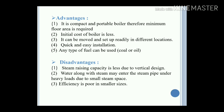Advantages of the Cochran boiler: it is a compact and portable boiler, therefore minimum floor area is required. Initial cost of the boiler is less. It can be moved and set up readily in different locations. Quick and easy installation. Any type of fuel can be used. Disadvantages: steam raising capacity is less due to the vertical design. Water along with steam may enter the steam pipe under heavy load due to the small steam space. Efficiency is poor in smaller sizes.